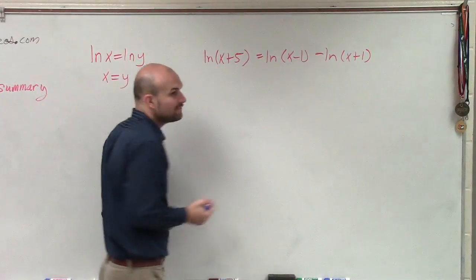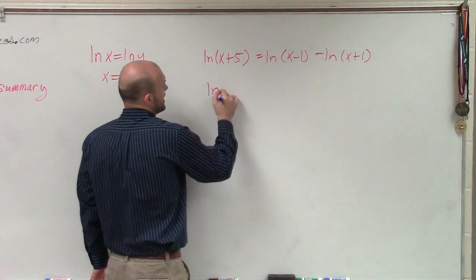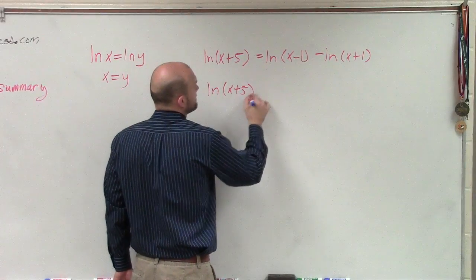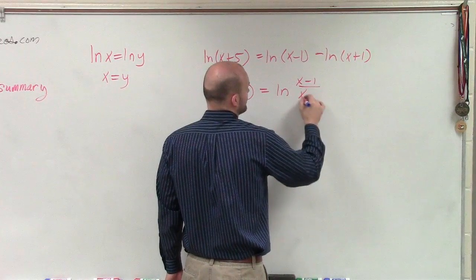However, I do have the difference of two logarithms that I know I can rewrite as the quotient. So therefore, I can have ln of x plus 5 equals ln of x minus 1 over x plus 1.